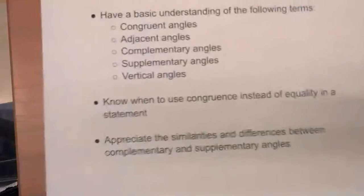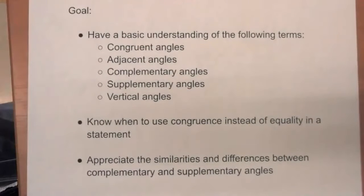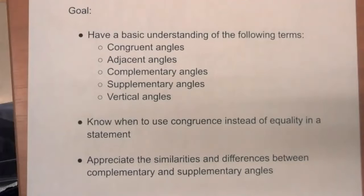Let's review what we covered in this video. We talked about congruent angles and congruent line segments. We talked about adjacent angles. We talked about complementary and supplementary angles, and we talked about vertical angles. Hopefully you have some appreciation of when we use congruence versus equality in a statement. We're going to have plenty of time over the course of the year to talk about this in more detail. When you see complementary and supplementary angles, remember which word goes with which diagram: complementary angles form a corner and supplementary angles form a straight line.